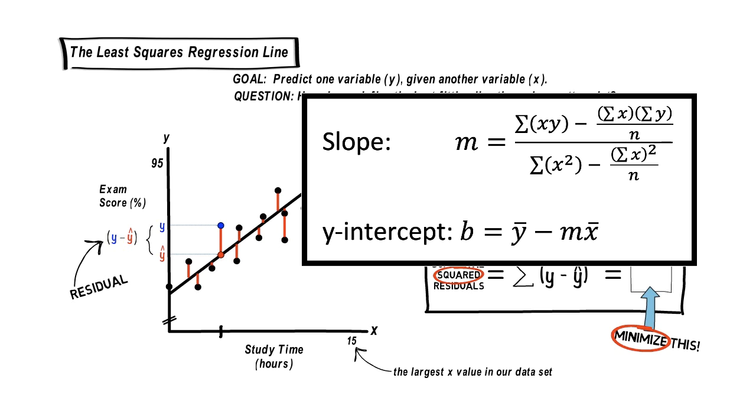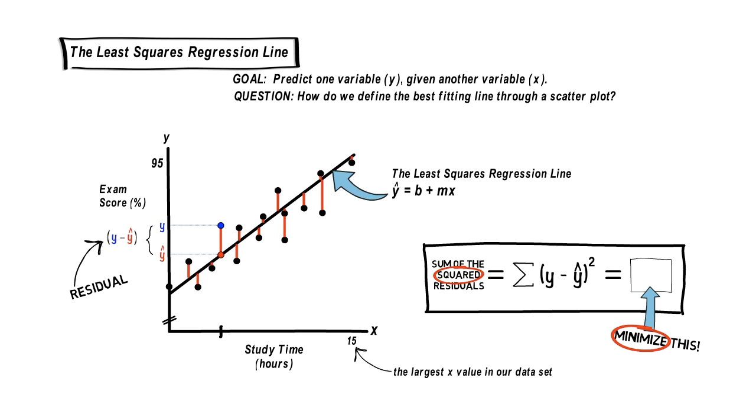OK, back to our problem. For our example, if we plug in our data into the formulas for the y-intercept and the slope, it turns out we get a y-intercept of b equaling 60 and a slope of m equaling 2. Don't worry, I'm not going to have you calculate those numbers. It will be your job to simply use them.